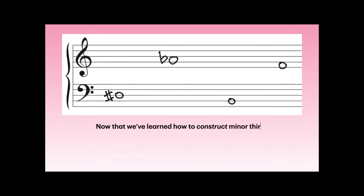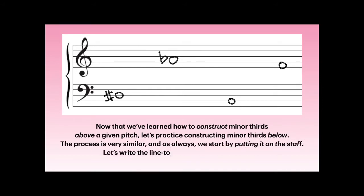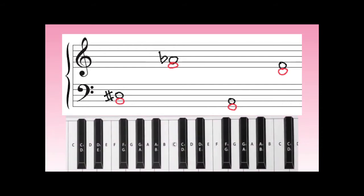Now that we've learned how to construct minor thirds above a given pitch, let's practice constructing minor thirds below. The process is very similar — as always, we start by putting it on the staff. Let's write the line-to-line or space-to-space note below each of these given pitches. Now we count our half-steps on the keyboard — three half-steps away gives us the quality of a minor third.